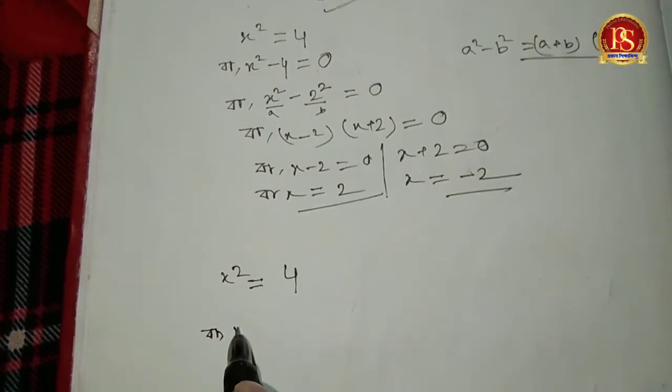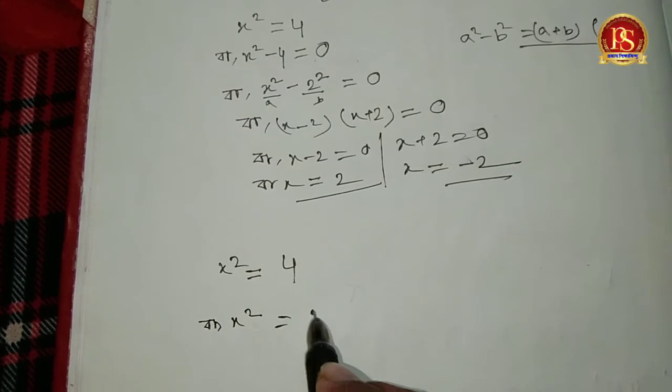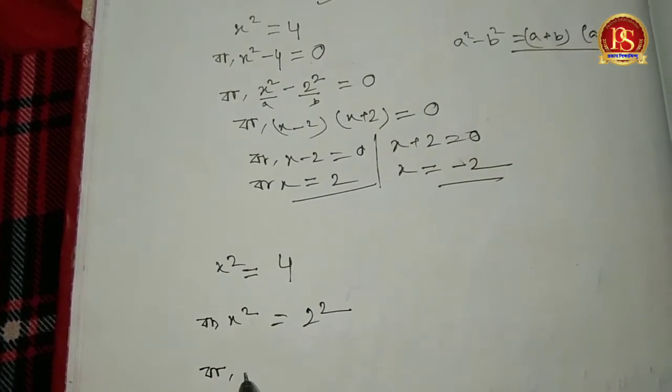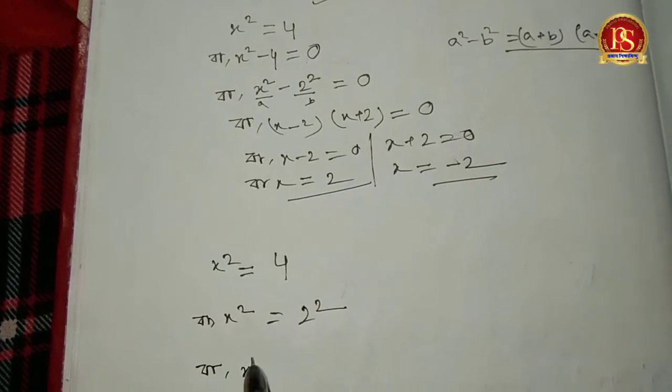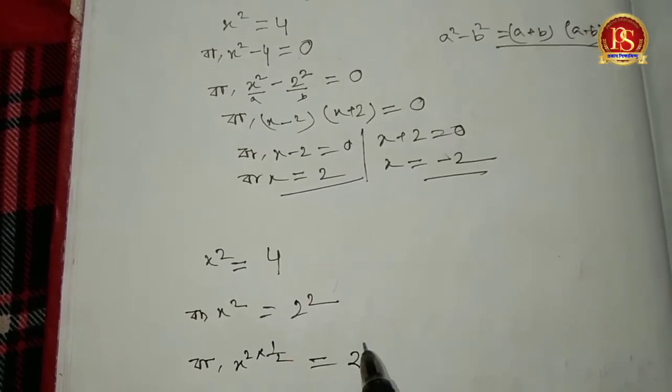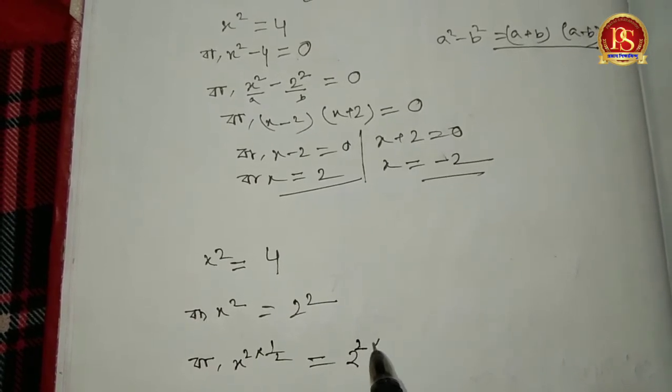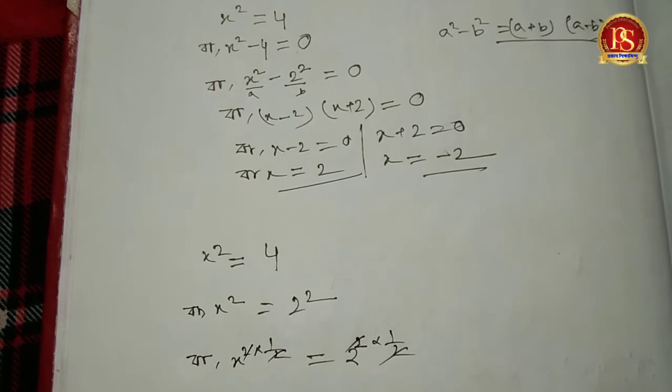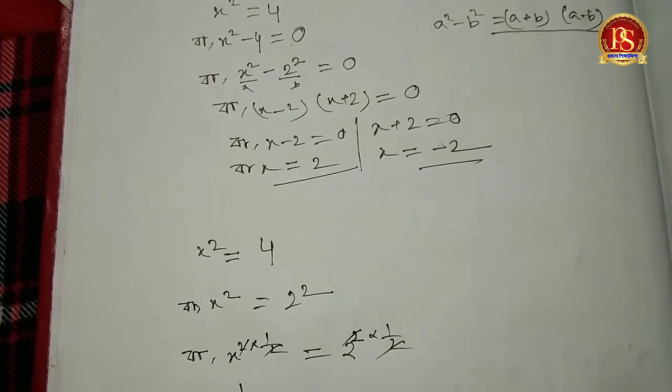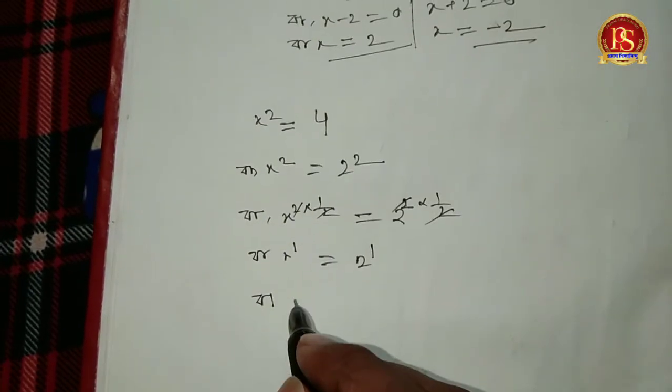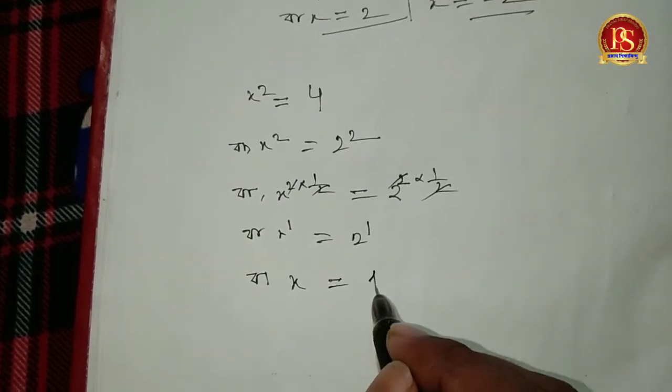We can write x² = 2². Taking the square root on both sides, we get x = ±2. When we take the square root of both sides, we must consider both the positive and negative square roots, which is why we get ±2.